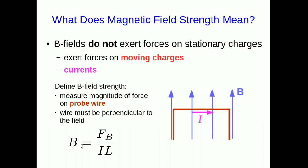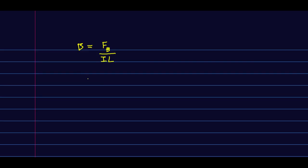And our B field strength, no vector symbol here, this is a magnitude, is just the strength of that magnetic force on the wire divided by the current through the wire and its length. Now that we have a definition of field strength, we can define the unit of it. The unit of the B field is called the Tesla T.